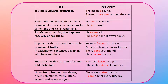Let us look at when we use the simple present tense. First, to state a universal truth or fact — for example: 'The moon is round' and 'The earth revolves around the sun.' Second, to describe something that is almost permanent or has been happening for some time and is still continuing — for example: 'We live in London' and 'She is a singer.'